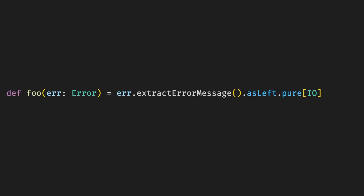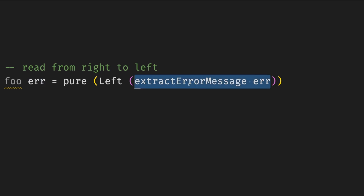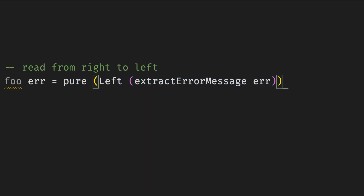Take this code example. We have some function that takes an error. It extracts the error message out of the error, then wraps it in the left and lifts it into a pure path. There are multiple ways to translate this into Haskell. The most straightforward way is to write a function foo that takes an error — we extract the error message, lift it into left, and pure. Notice the order of functions and how we call them: there are no parentheses after extract error message. We have parentheses in other places, but for associativity, not for function calls.